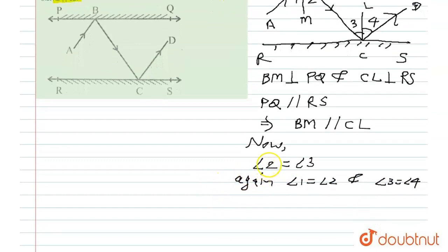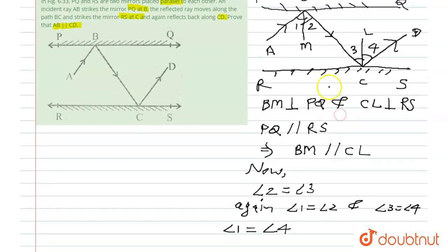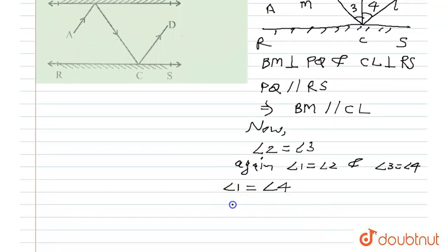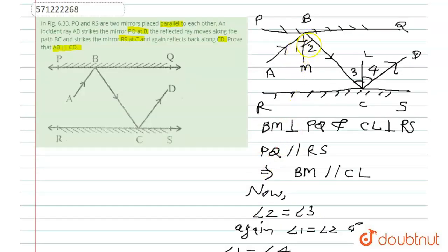From these three statements, we can write: angle 1 = angle 2, angle 2 = angle 3, and angle 3 = angle 4. Therefore angle 1 = angle 4. Now, since angle 2 = angle 3, if we add angle 2 to angle 1 and angle 3 to angle 4, we get: angle 1 + angle 2 = angle 4 + angle 3.